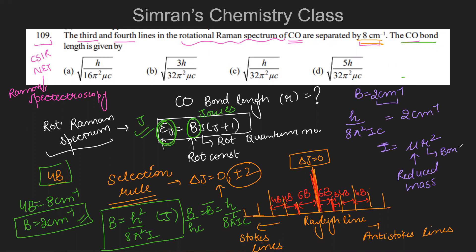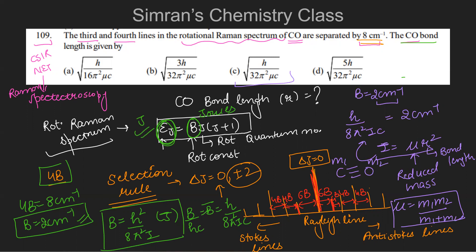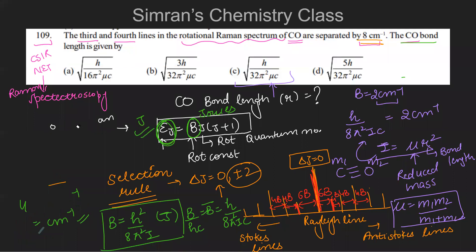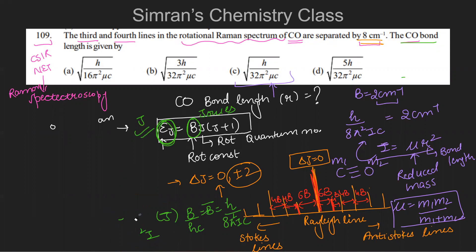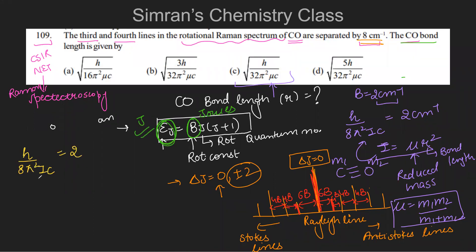The moment of inertia is I = μr², where μ is the reduced mass and r is the bond length we want to find. The reduced mass is μ = m₁m₂/(m₁+m₂), where m₁ and m₂ are the masses of carbon and oxygen respectively in carbon monoxide.